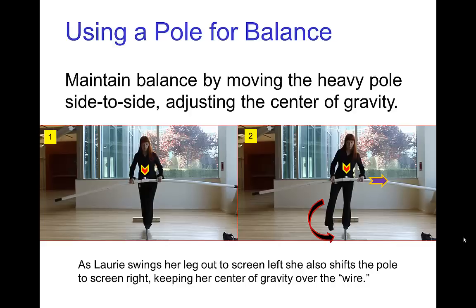We often see tightrope walkers carrying a pole. One of the things the pole is useful for in terms of maintaining balance is if you have a heavy pole, you can adjust the total center of gravity by shifting the pole from side to side. Here we see Lori standing on a pipe, and as she's crossing one foot in front of the other to walk forward, she has to bring her leg to the screen left side. So she naturally shifts the pole to the screen right side, keeping the total center of gravity over her foot.